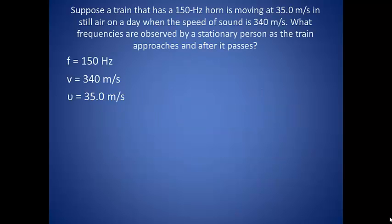Suppose a train that has a 150 Hz horn is moving at 35 m per second and still air on a day when the speed of sound is 340 m per second. What frequencies are observed by a stationary person as the train approaches and after it passes? So we know that the source is moving towards us and then moving away from us. We also know that the velocity of the wave as well as the velocity of the source.